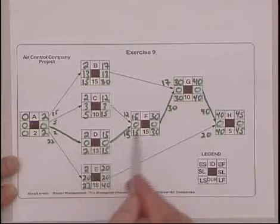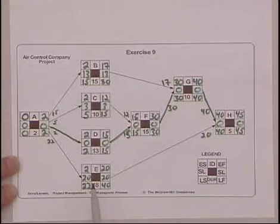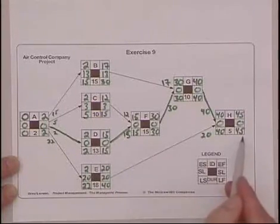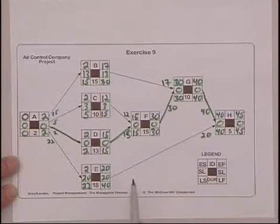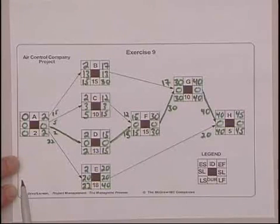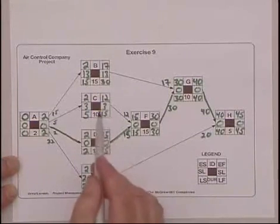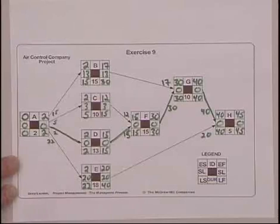A delay in the estimated duration of any one of these five activities will delay the project. If activity D takes 15 days instead of 13 days, it will add 2 days to the duration of the project. If, however, activity B instead of taking 15 days ends up taking 20 days, it would not delay the completion of the project because it has a slack of 13.